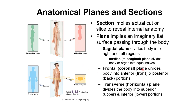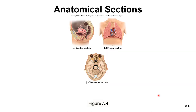The frontal or coronal plane divides the body into anterior, meaning front, and posterior, meaning back portions. The transverse or horizontal plane divides the body into superior and inferior portions. Here you can see a sagittal section, a frontal section, and a transverse section illustrated.